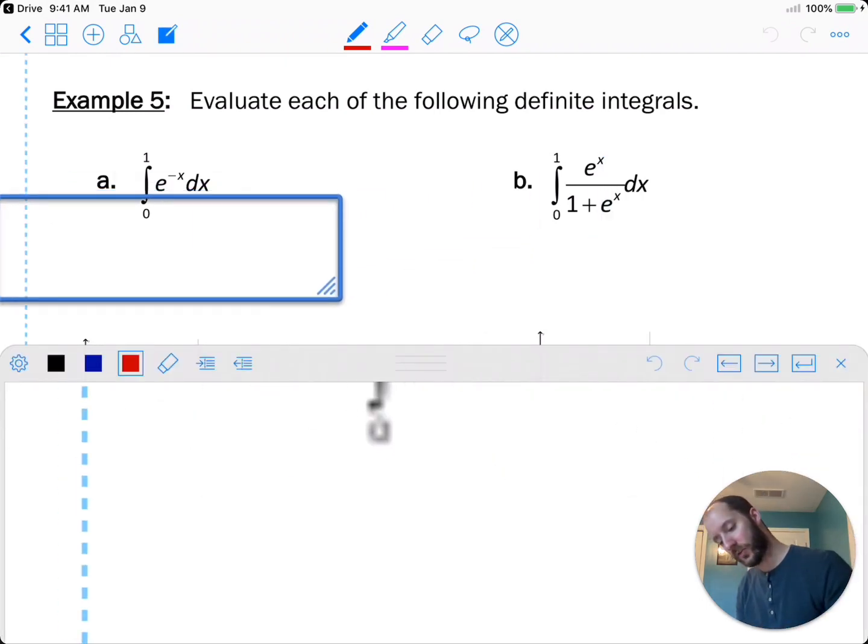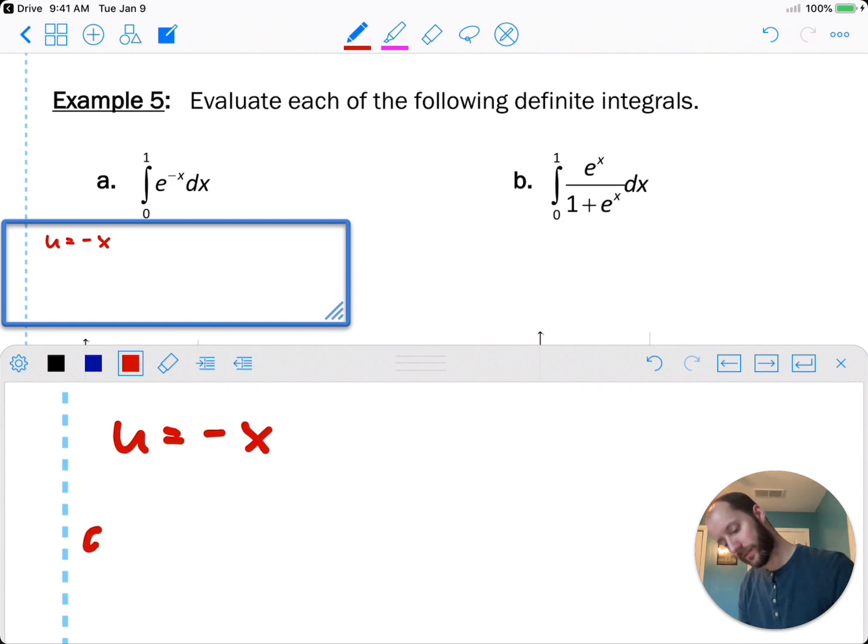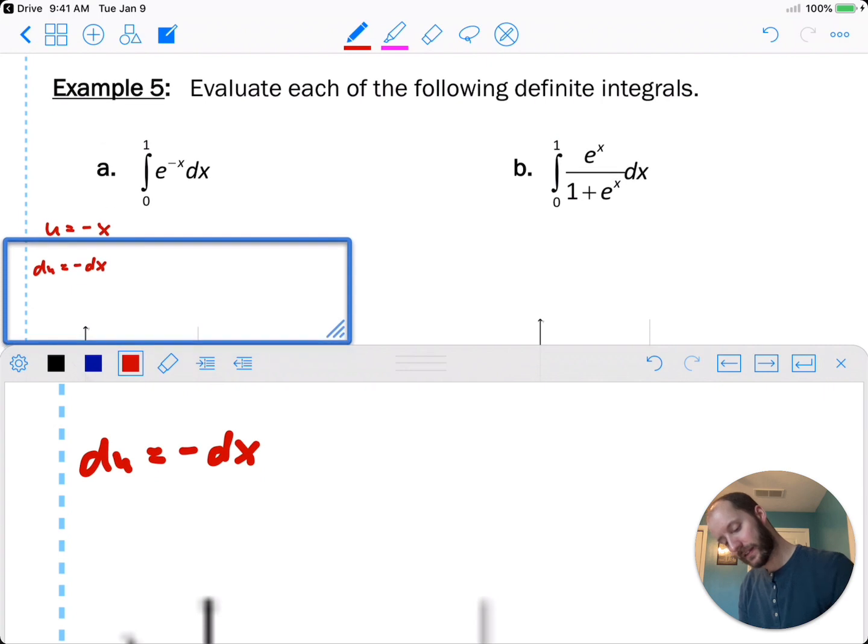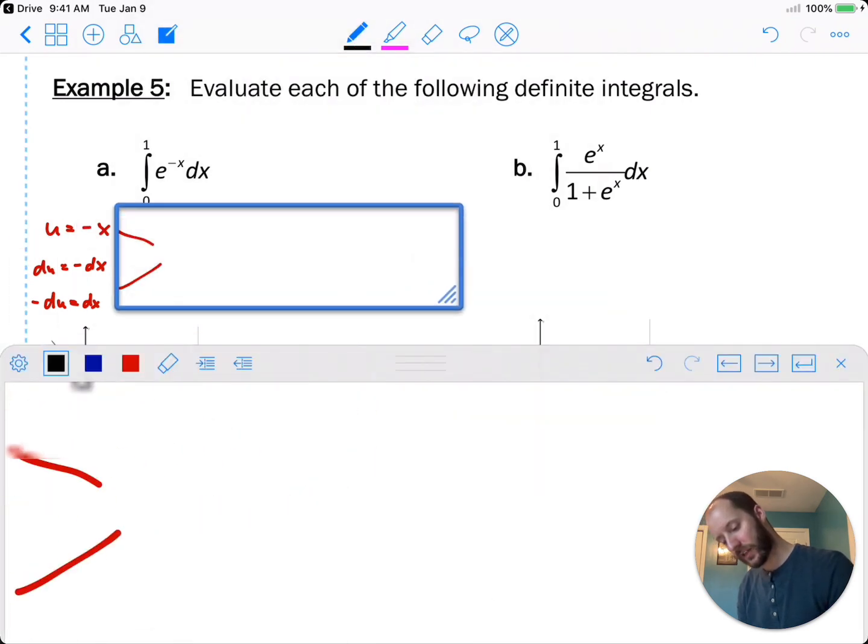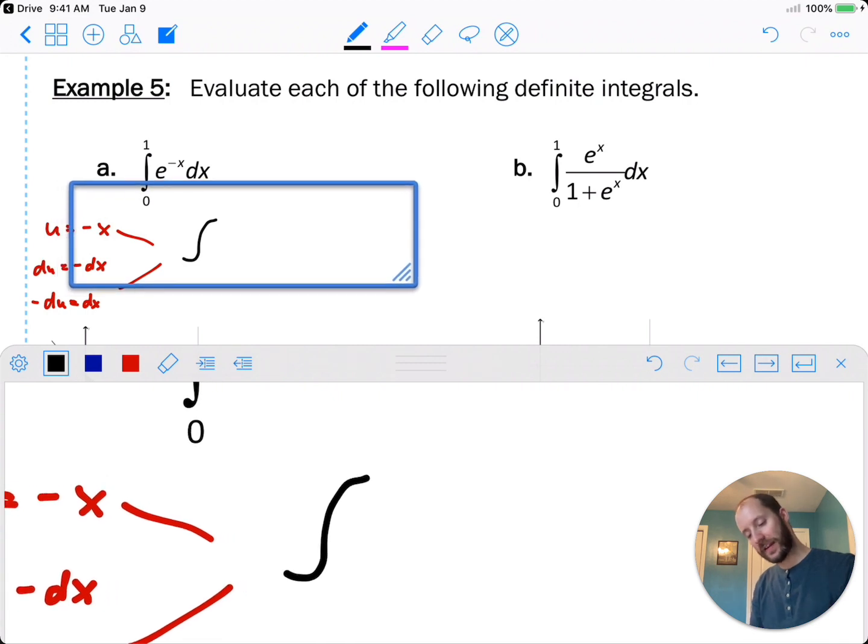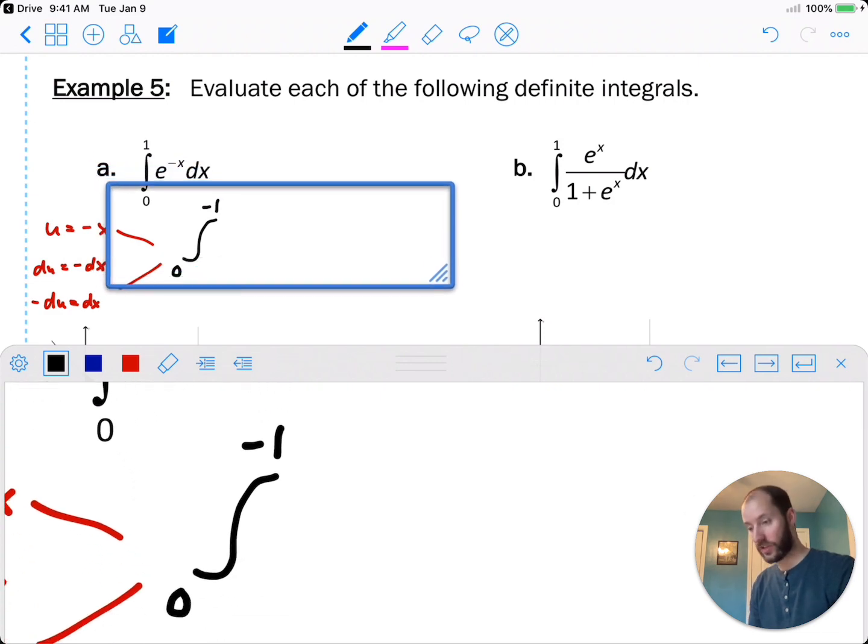And of course, going to start with a little u sub. u equals negative x. du equals negative dx. Negative du equals dx. So let's put all of that together. Our new bounds. Plug in 0 for negative x. So negative 0, 0. Plug in 1. Negative 1. Oh, interesting.